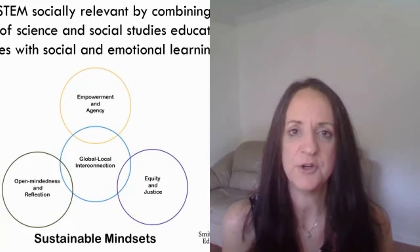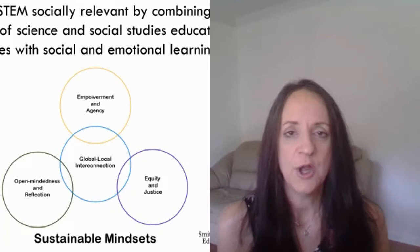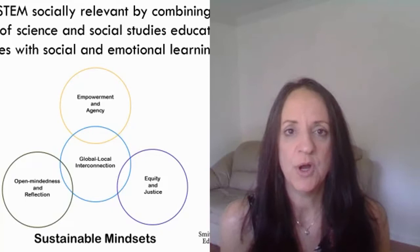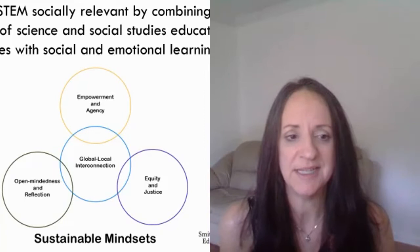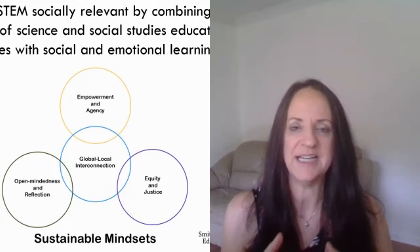Another strategy is making STEM socially relevant by combining science and social science education practices, including social-emotional learning. Shalina's story about her French teacher incorporating different cultural aspects into the classroom illustrates this — those cultural aspects matter. Resources will be shared showing how to embed into STEM classrooms opportunities for empowerment and agency, equity and justice, open-mindedness and reflection, and local-global interconnection where students can see how their identity shifts.